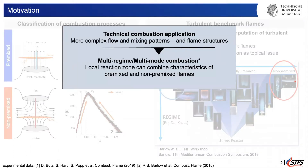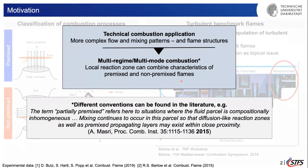In technical combustion applications and benchmark flames, we have fairly complex flow, mixing patterns, and flame structures — what I call multi-regime or multi-mode combustion. What I mean is that the local reaction zone can combine characteristics of both premixed and non-premixed flames. The terminology varies in the literature; for example, Pitsch in his review paper at the 35th Combustion Symposium said the term 'partially premixed' refers to situations where the fluid is compositionally inhomogeneous, mixing continues to occur, and we have diffusion-like reaction zones as well as premixed propagating layers existing in very close proximity.